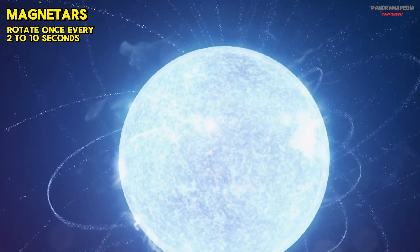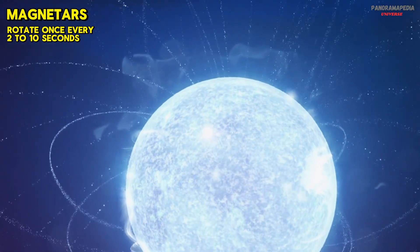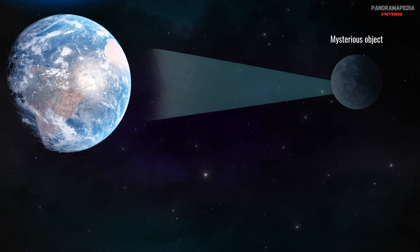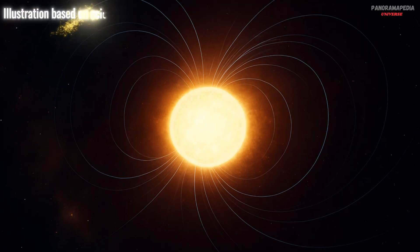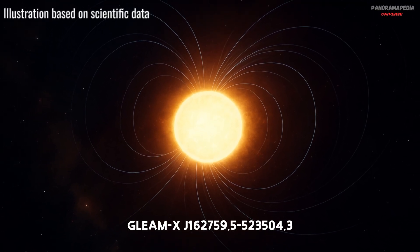Magnetars, known for extreme magnetic fields, rotate once every 2 to 10 seconds. This one? It was quiet then bright, and then vanished again. It became known as GLEAM-X, a name almost as strange as the object itself.